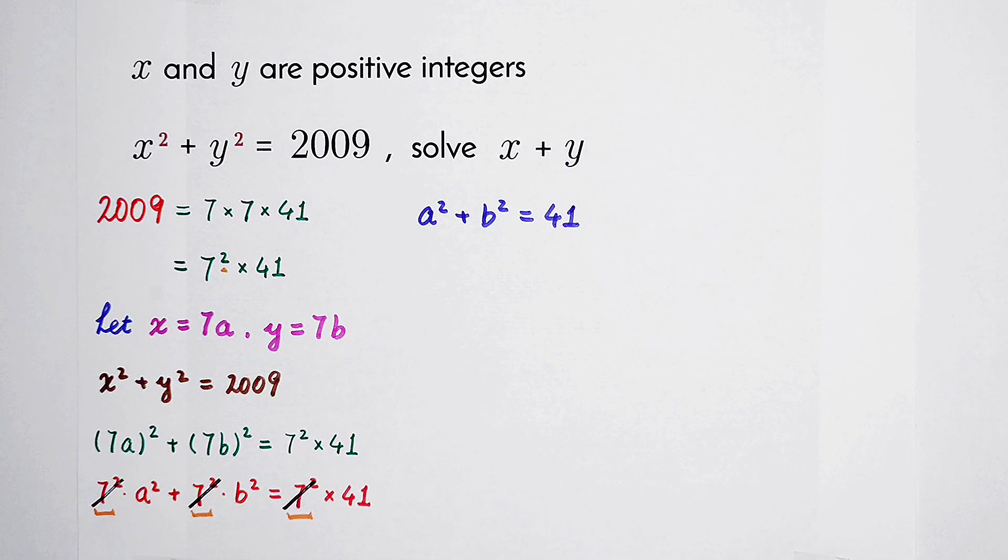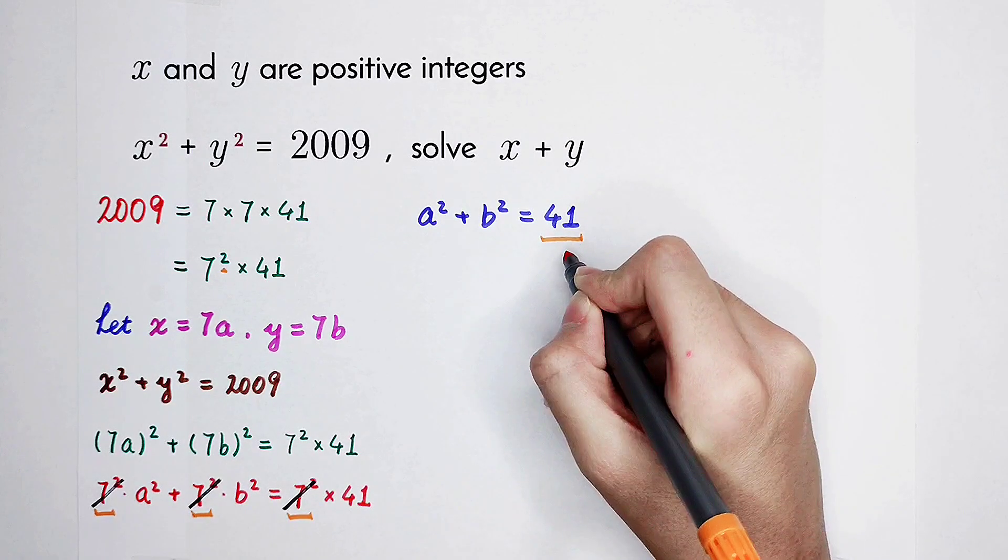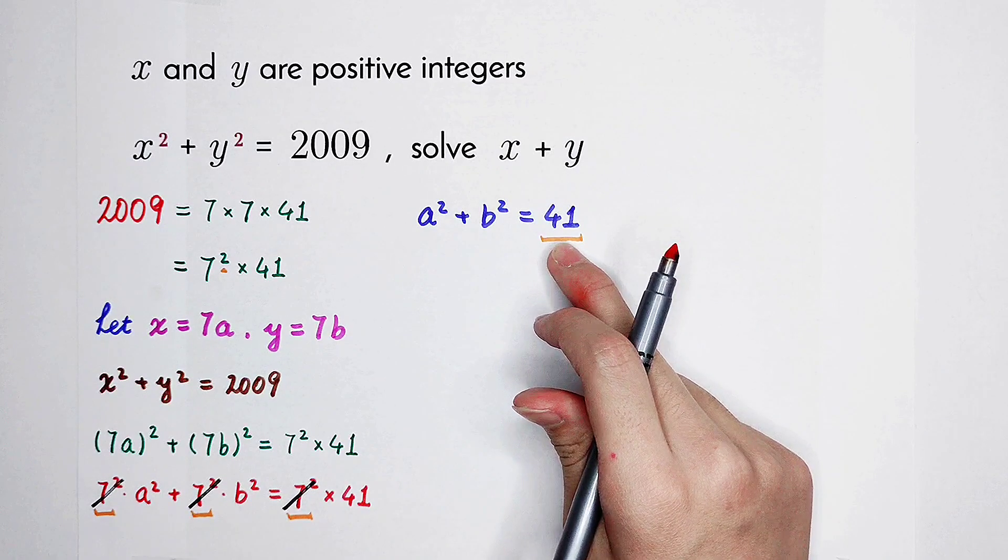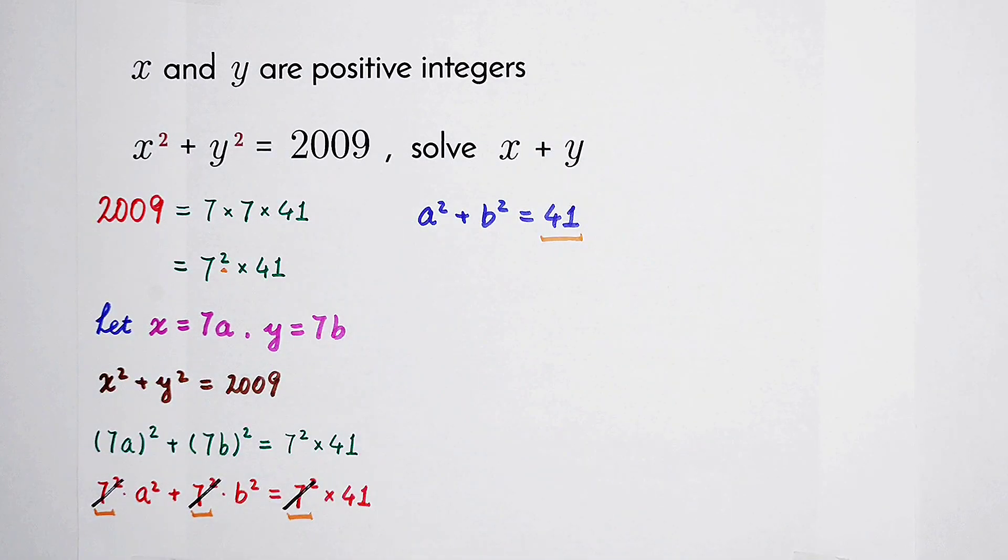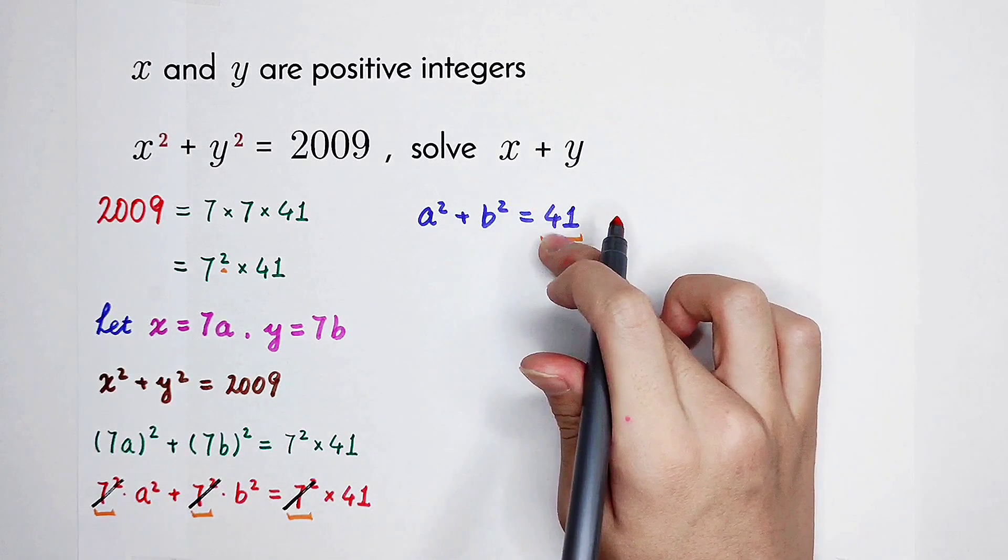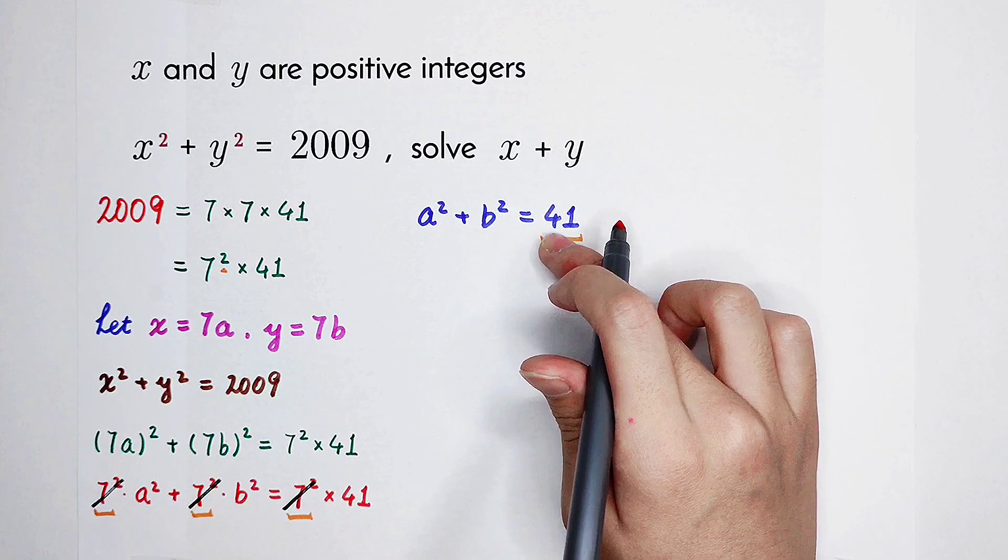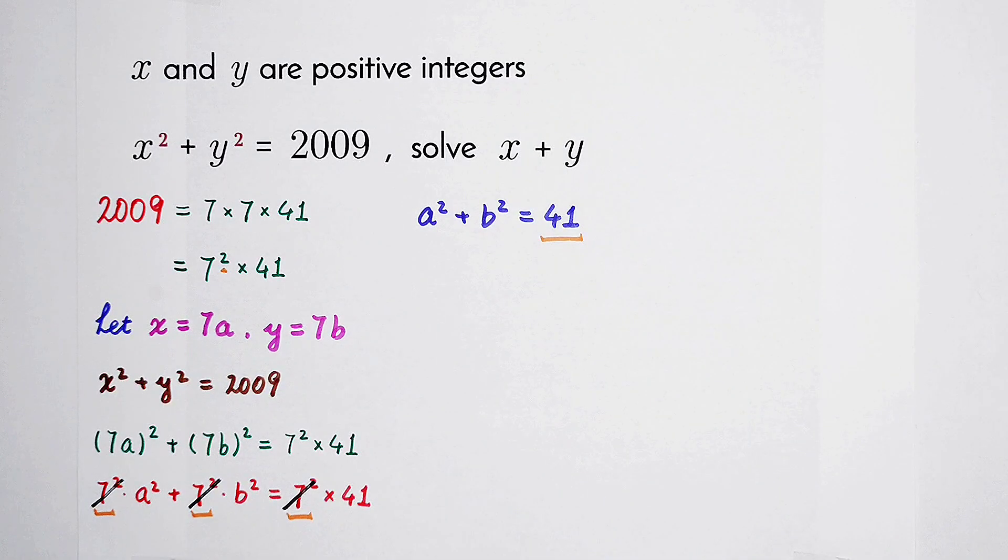Now, this equation has the same form as our original equation. But, what are the differences? There is only one difference. That is, the left hand side is not so large as 2009. 41 is less than 100, less than 50 even. But, 2009 is greater than 2000. It's too large. For dealing with this 41, we have to consider the squared numbers which are less than 41.